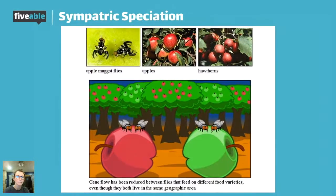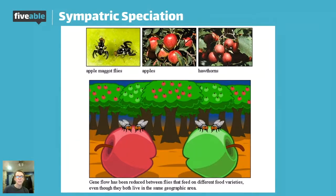A really common example of sympatric speciation — and another example of habitat isolation — is with apple maggot flies. What happened with these apple maggot flies is exactly what was just said: they're adapting to different ecological niches. A niche is going to be a location or an organism's role in its ecosystem — what it eats, where it lives, who eats it, its role in the food web, whether it's a pollinator, all of those things.